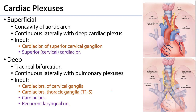The cardiac plexuses are actually two structures: a superficial plexus and a deep plexus. The superficial plexus is found anterior and inferior to the concavity of the arch of the aorta. Its inputs include cardiac branches from the superior cervical ganglion, especially on the left side, as well as the parasympathetic cervical cardiac branches descending the neck — together comprising the superficial cardiac plexus, again especially on the left.